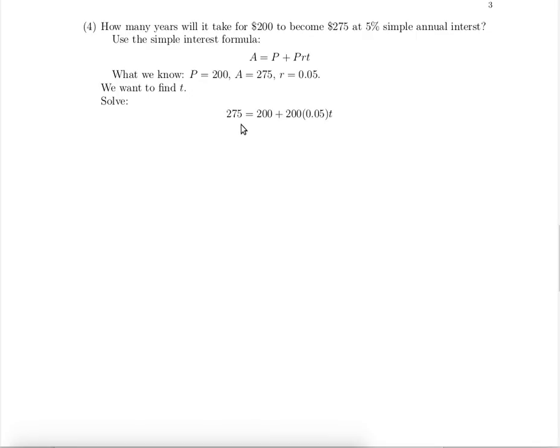Substituting in the values, we need to solve this equation for T. 5% of 200 is 10, so the equation becomes 275 = 200 + 10T. The algebra tells us to subtract 200 from both sides and divide by 10. We discover it will take 7.5 years for the $200 to become $275 at 5% simple interest.